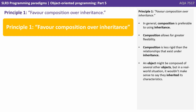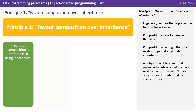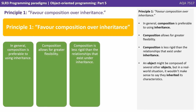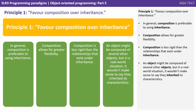Principle one: favour composition over inheritance. In general, composition is preferable to using inheritance because composition allows for greater flexibility. It's less rigid than relationships that exist under inheritance. An object might be composed of several other objects, but in a real-world situation it wouldn't make sense to say they inherited its characteristics.